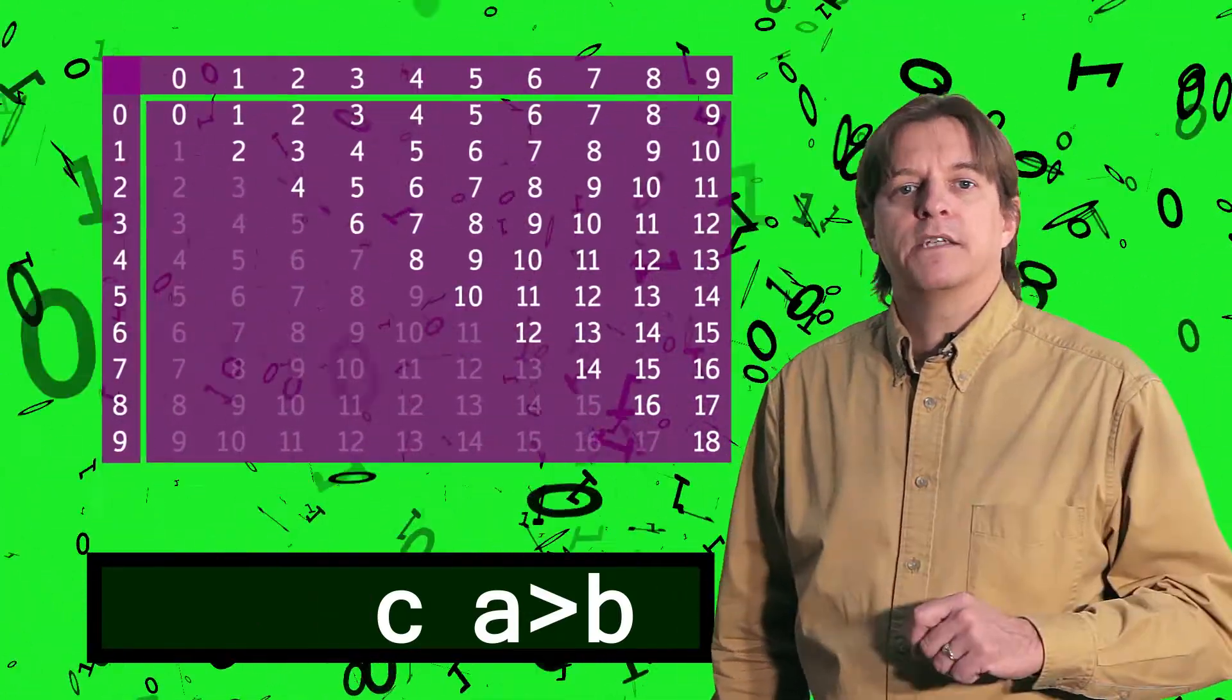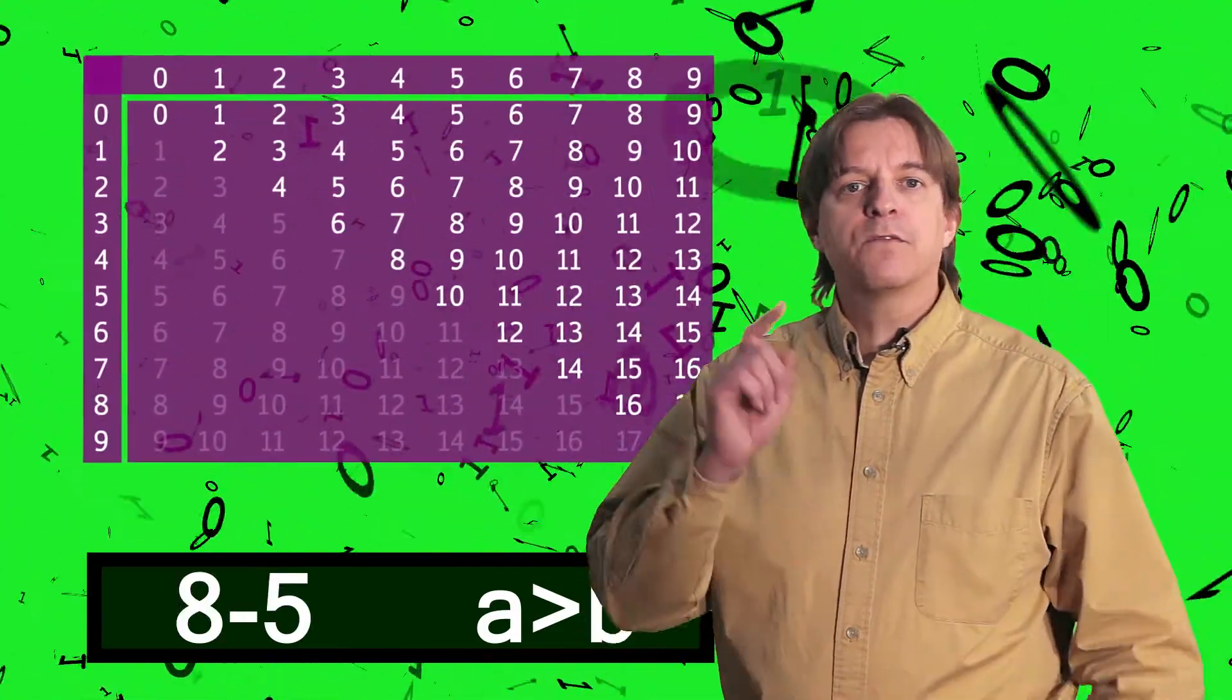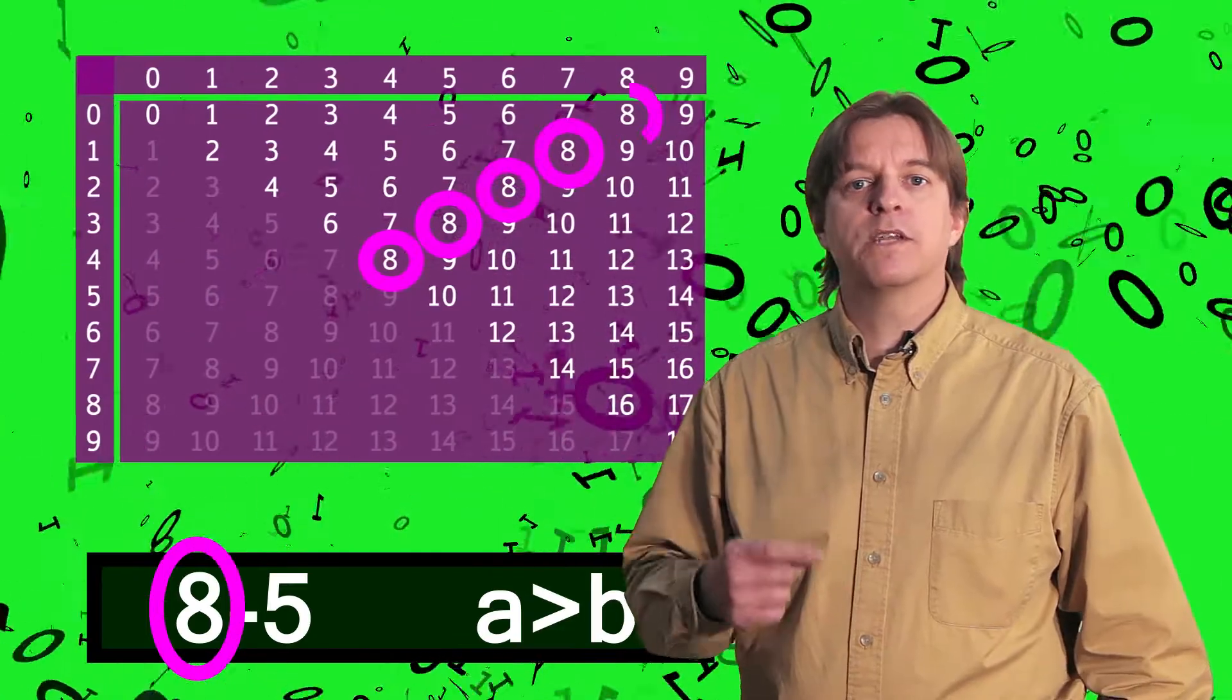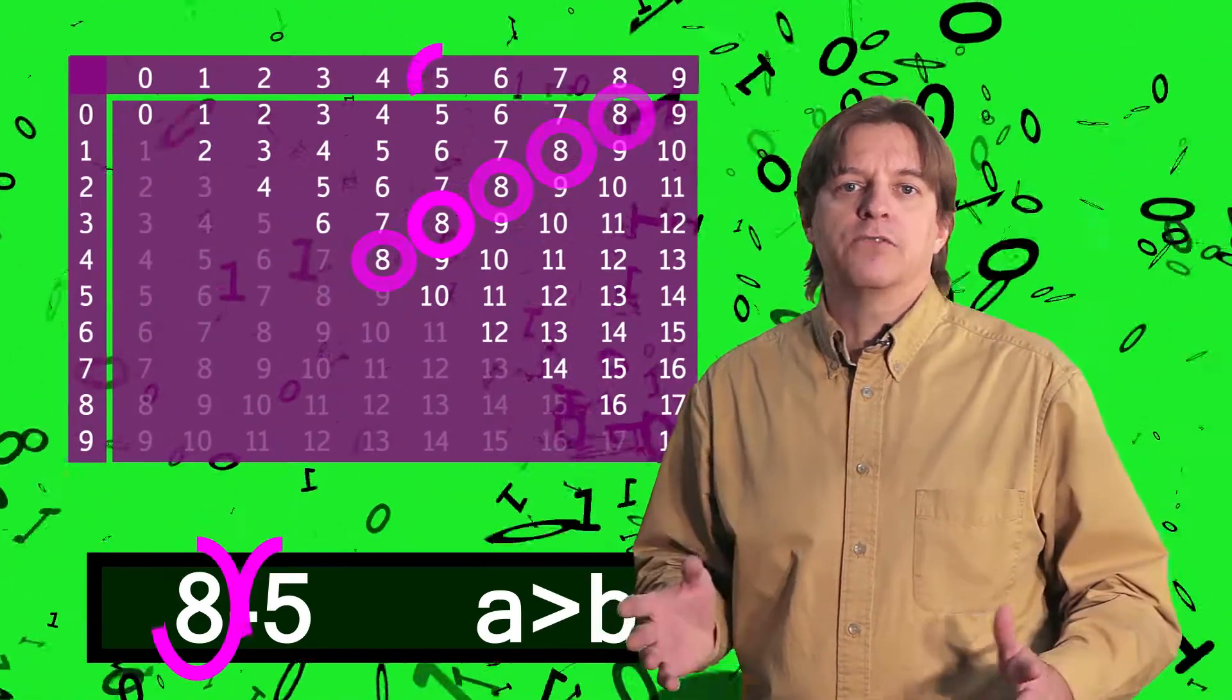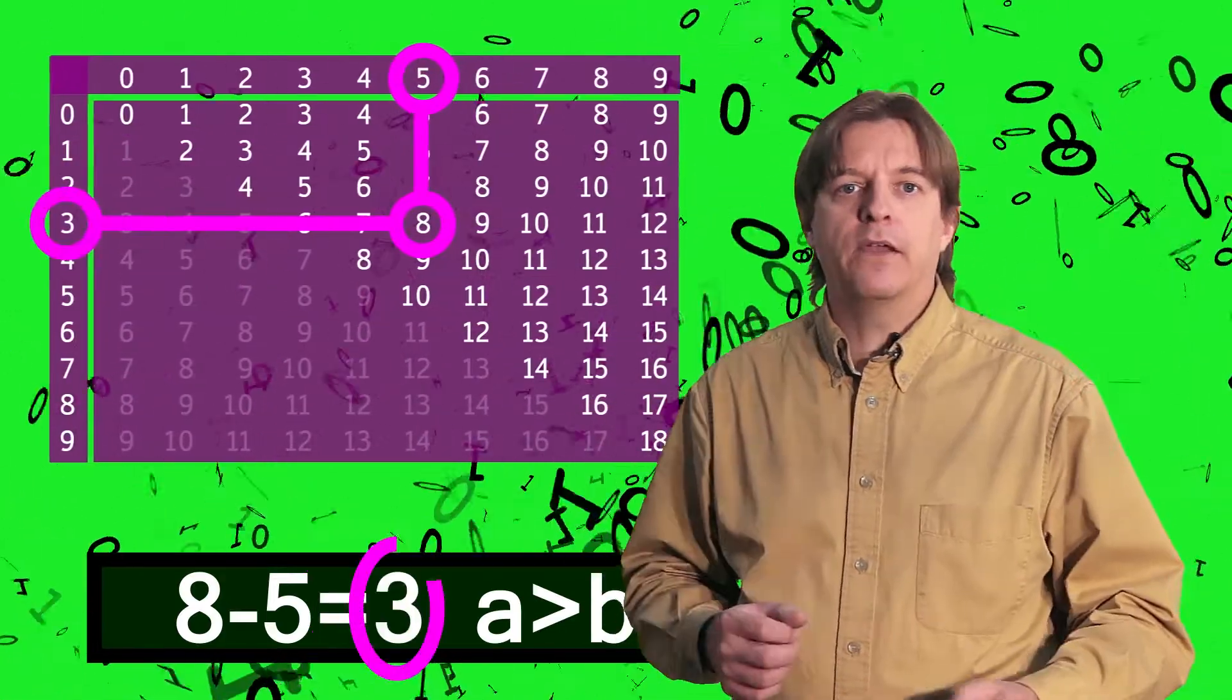When describing the process, we'll use an example, 8-5. The process is to first find the entries in the table for the first number. Then, of those entries, you find the one with the other number in the header. The answer is the other header value.